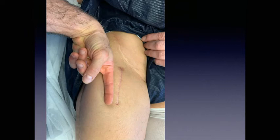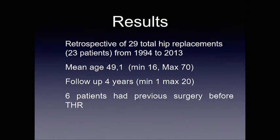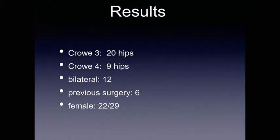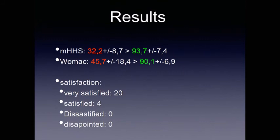As a result of all this experience — in fact, at the end it's only 30 cases, as I probably did more in my public hospital but wasn't able to get those results. Rather young patients, but not always very young. We have good follow-ups, minimal one year, but some are nearly 20 years now. Six patients had previous surgery before total replacement. Three patients had to be revised for polyethylene wear — operated in the late 90s at 14, 16, and 18 years. One patient died; she had two hips. So we only have 24 hips to control. That's the result. It works.